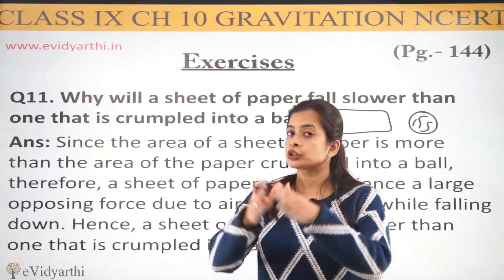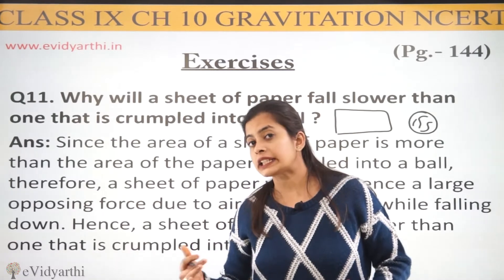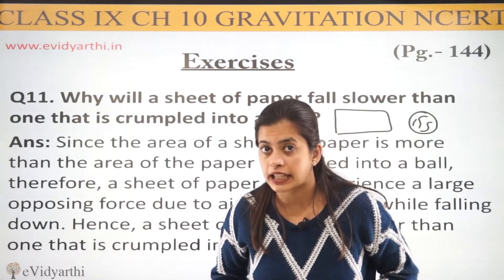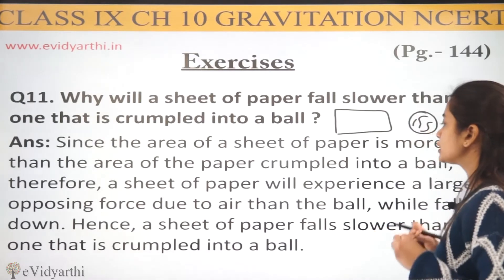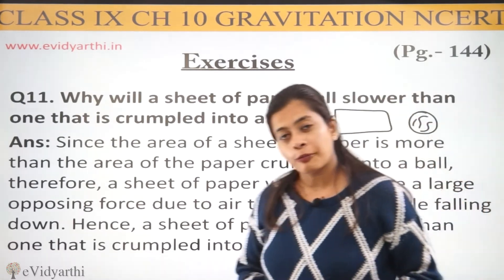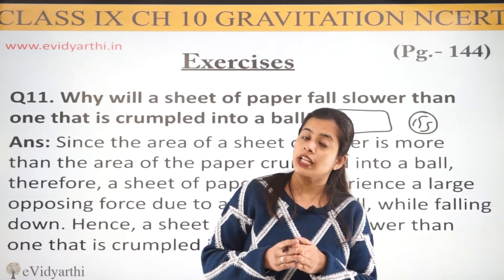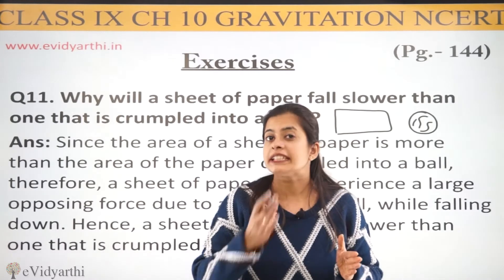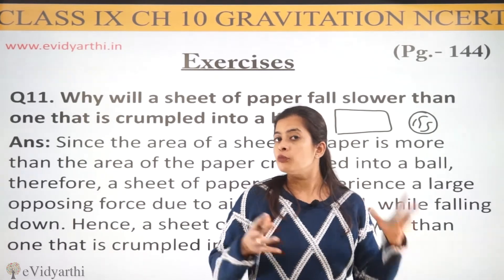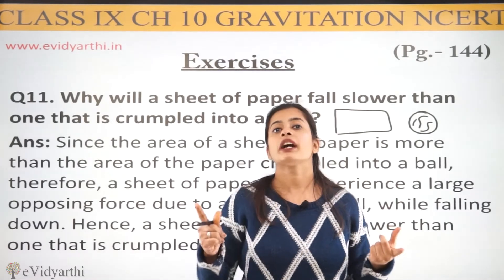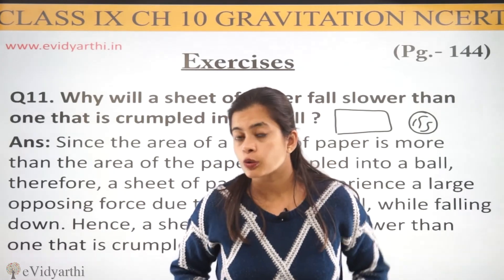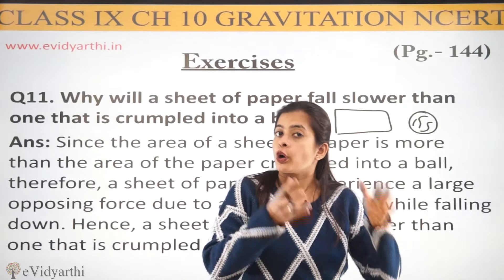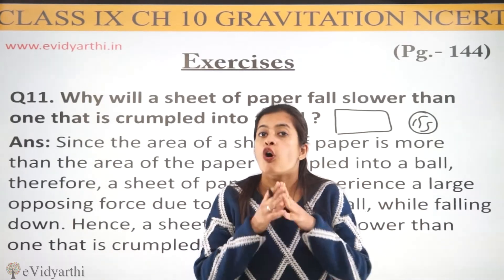Isi wajah se hum keh sakte hain ki hamaara sheet of paper woh ek larger opposing force ko, air ki wajah se, experience karega. Aur jiski wajah se, uska jo movement hai, woh hamare ball ke comparison mein slow dikhai deta hai. So by falling down, hence a sheet of paper falls slower than one that is crumbled into a ball. Aur jis wajah se hum keh sakte hain ki because of the large area, it will experience a more opposing force due to air as compared to the ball of the same paper sheet. Aur jis wajah se jo dono ka movement rahega — hamaari crumble ball ka faster rahega — with comparison to the sheet of paper. Chahe wahi same sheet ho, lekin kyunki ek ka area zyada rakha hai aur doosre ka area kam hai, jiski wajah se opposing force ka action opposite ho jayega.